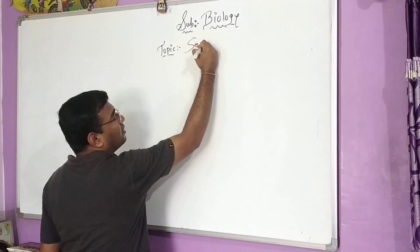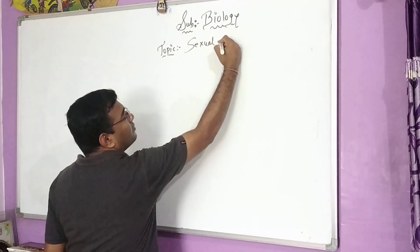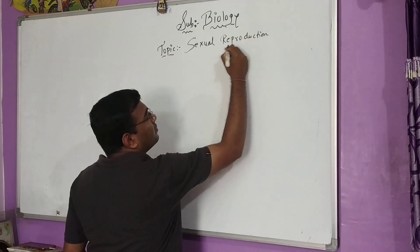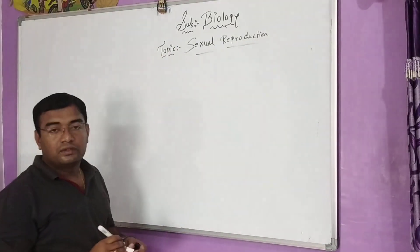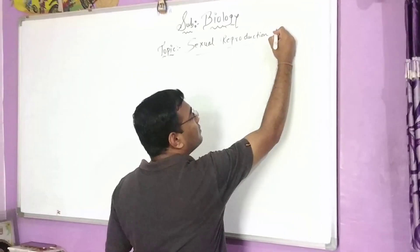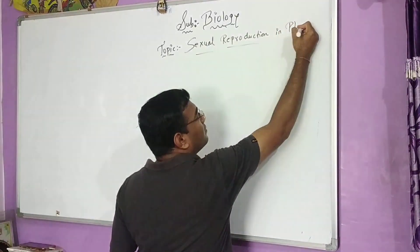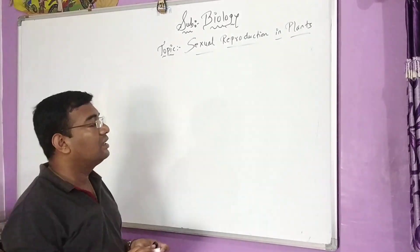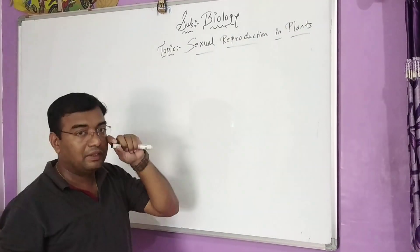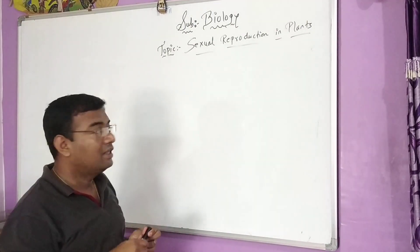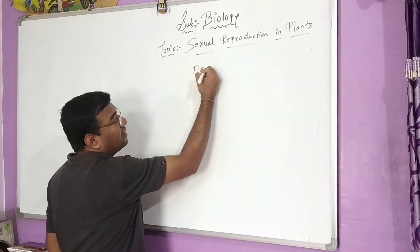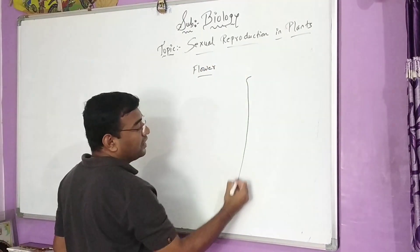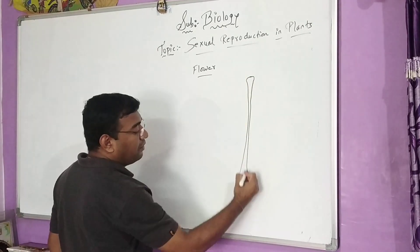Our next topic is sexual reproduction in plants. This is a very common topic which you have already studied in your previous classes. Sexual reproduction takes place in plants with the sexual part, and that part is the flower. You know that the flower is nothing but a sexual reproductive part. We will draw a flower to explain the different parts.